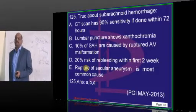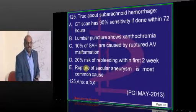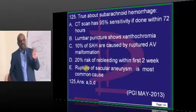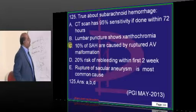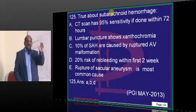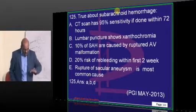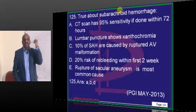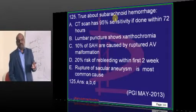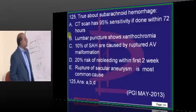For subarachnoid hemorrhage, the investigation of choice is CT scan, which has 95% sensitivity if done within 72 hours. On lumbar puncture, RBCs that entered the subarachnoid space between the meninges will enter the CSF, get broken down, and release bilirubin — leading to xanthochromia.